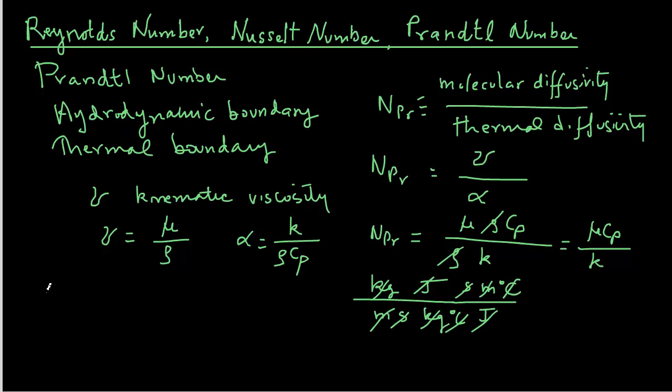If Prandtl number is equal to 1, then that means that the thickness of both boundary layers is the same. If Prandtl number is much less than 1, then the molecular diffusivity of heat is much larger than that of momentum. For water, Prandtl number is around 10, and for air, Prandtl number is around 0.7.